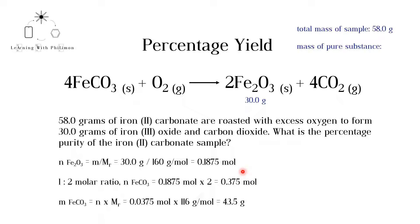To calculate the mass, we multiply moles by the molar mass of FeCO3. 43.5 grams of iron II carbonate are required to form 30.0 grams of iron III oxide. This means that the extra grams in the sample are impurities that have not reacted to form the desired product.